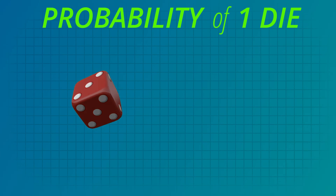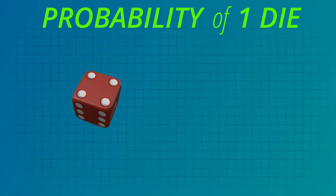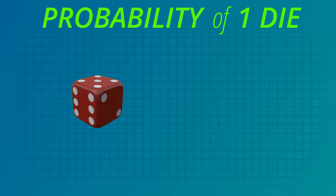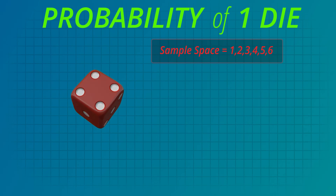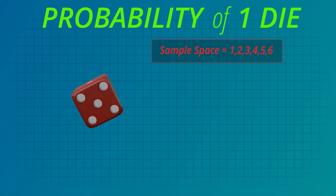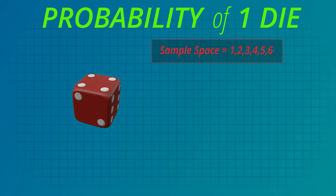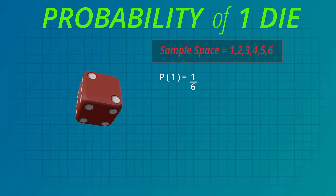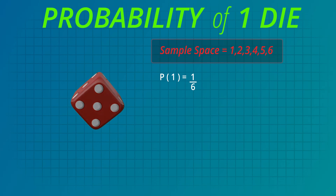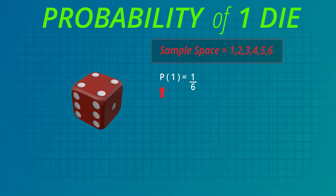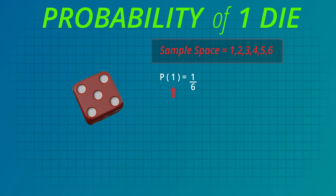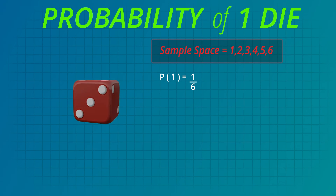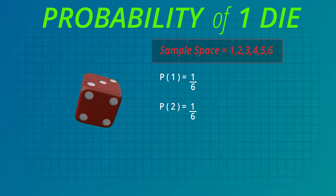Let's consider this six-sided die. Die is the correct name for one of these cubes; dice is the plural name for two or more. When a die is tossed it can land on any one side out of the six sides. These are the sample space — the possible outcomes that can happen. The chance that the die will land on the side marked one is one out of six, or one sixth. Using math symbols we write capital P for probability and one in parentheses, because the side marked one is the event in which we're interested.